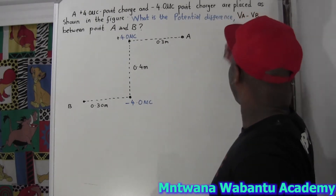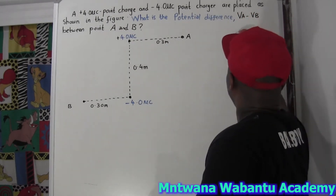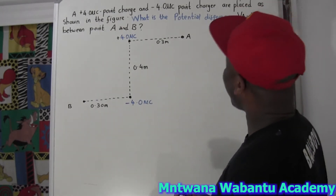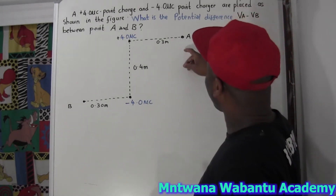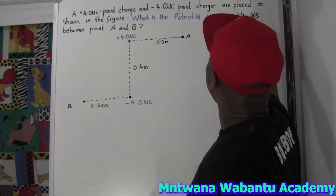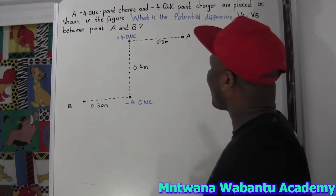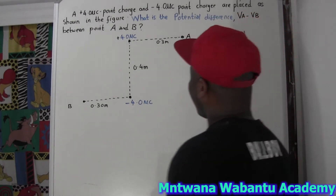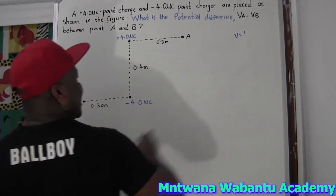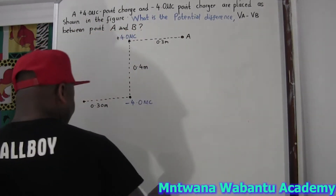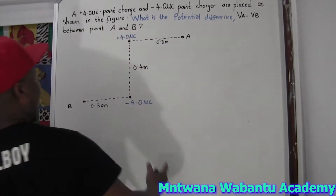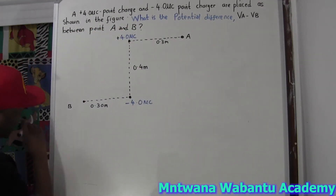We want to get the potential difference V, which is VA minus VB. That means whatever I get for VA, I must subtract VB. To get the potential difference we'll use this formula. Let me show you — we know this from when we did potential difference.